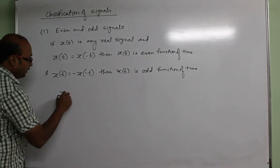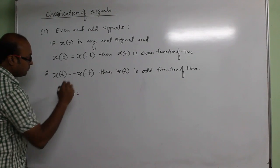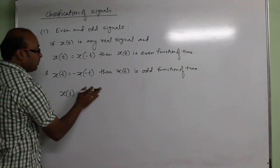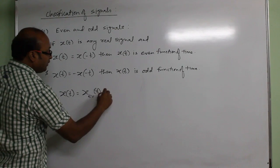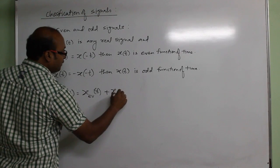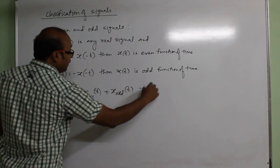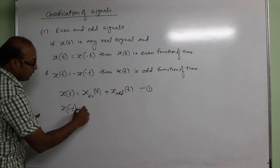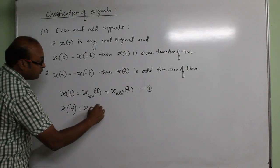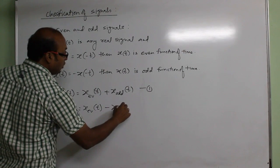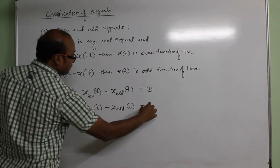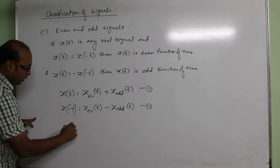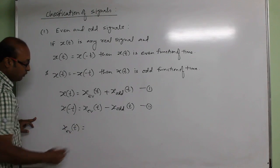Now, any signal x(t) is a combination of its even and odd parts. x(t) is the sum of its even and odd parts. Similarly, x(-t) is the difference of its even and odd parts. From these two equations we can write the expression for the even and odd parts of x(t).